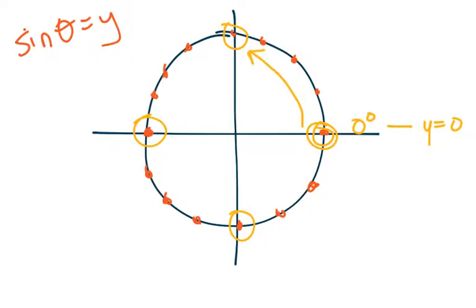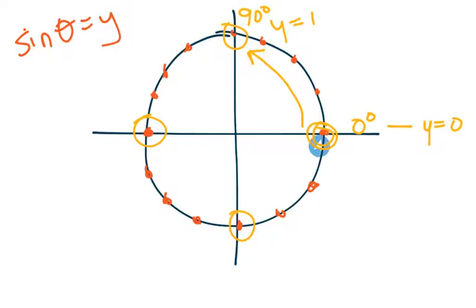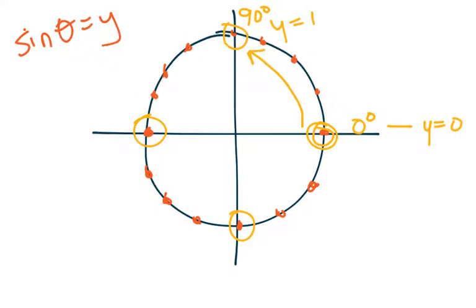As we go up to 90 degrees, or π/2 in radians, that y-value equals 1. So graphically, starting at zero degrees — the radians are the x-values on the graph. We're not using the x-values on the unit circle, but the degrees are actually the x-values. Then the y-values are the sine, which is the y-value of the points. I know that's a little confusing.